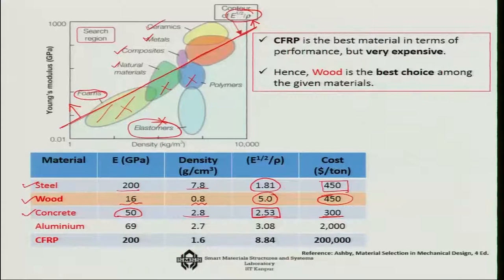Let us look at aluminum, one of the lighter metals although more expensive. 69 gigapascals, 2.7 density grams per cc, the factor will be 3.08, which means it is better than steel. But look at the cost, you are spending something like 3 to 3.5 times more than steel.